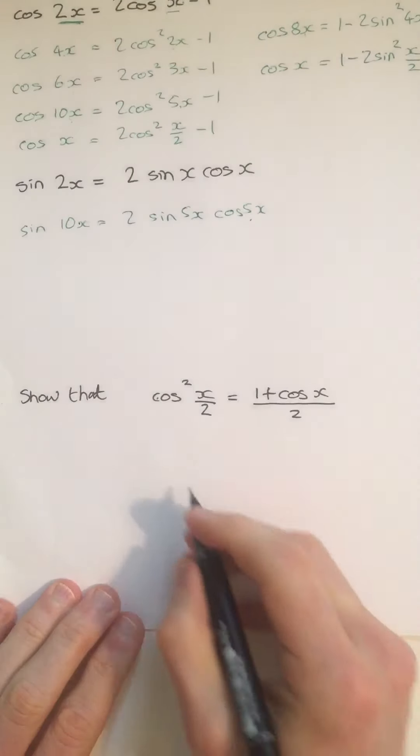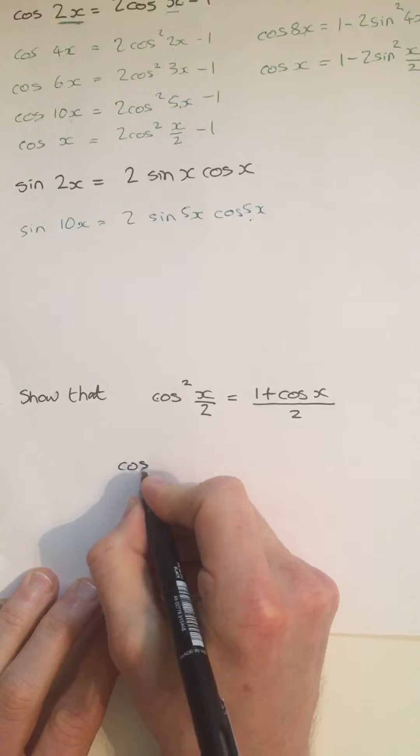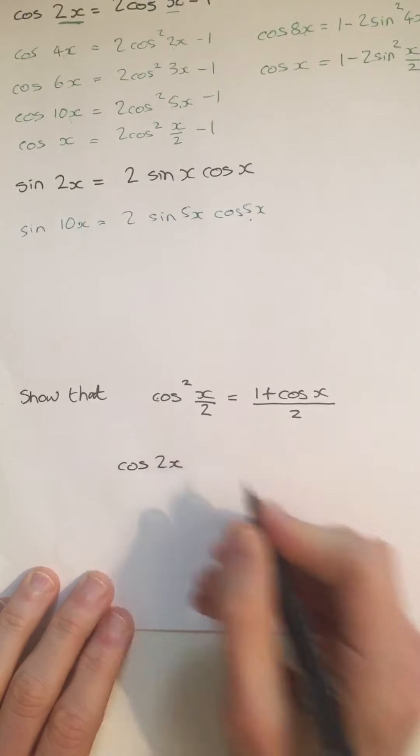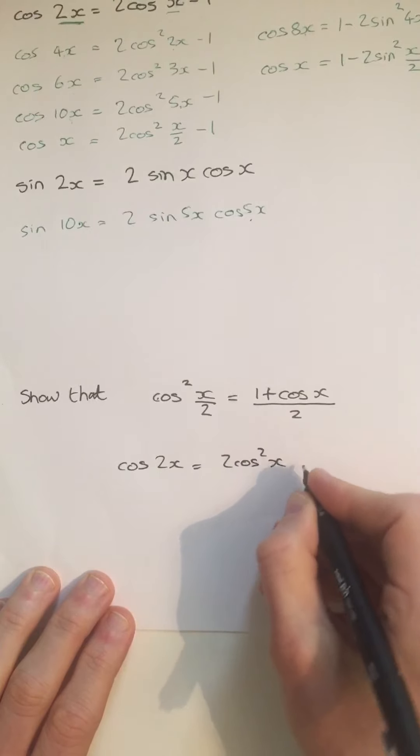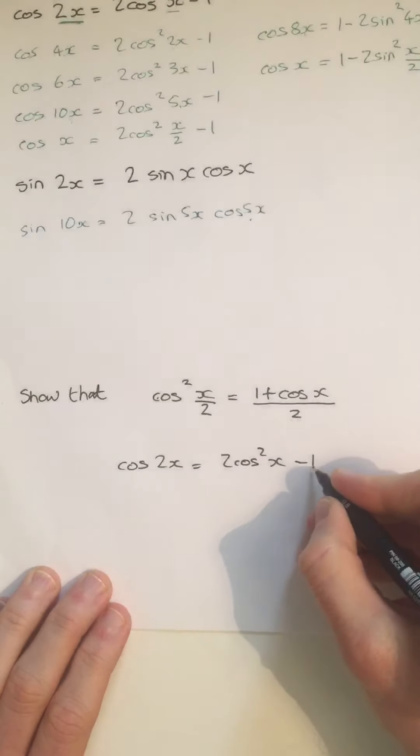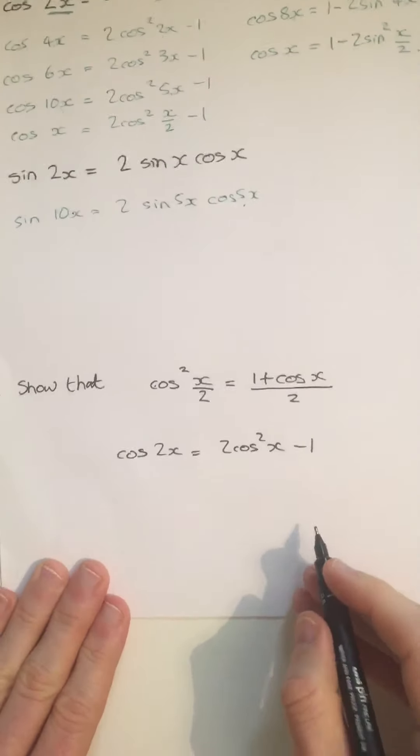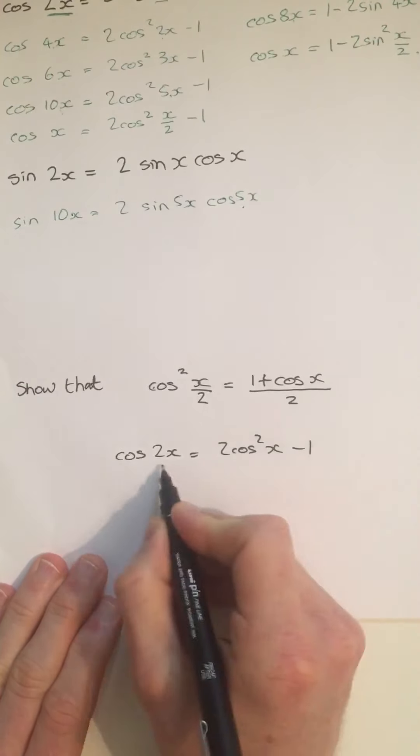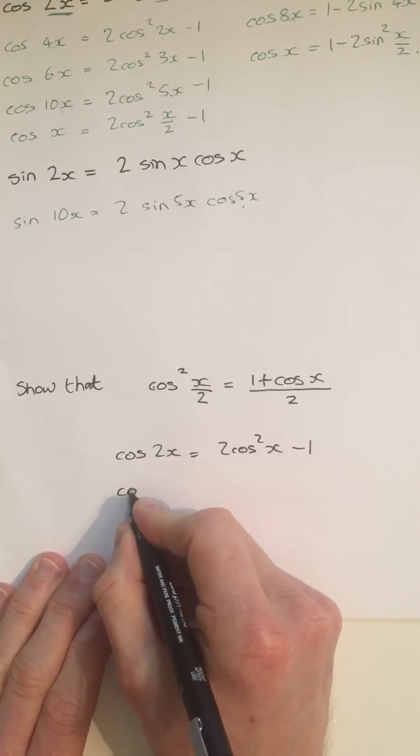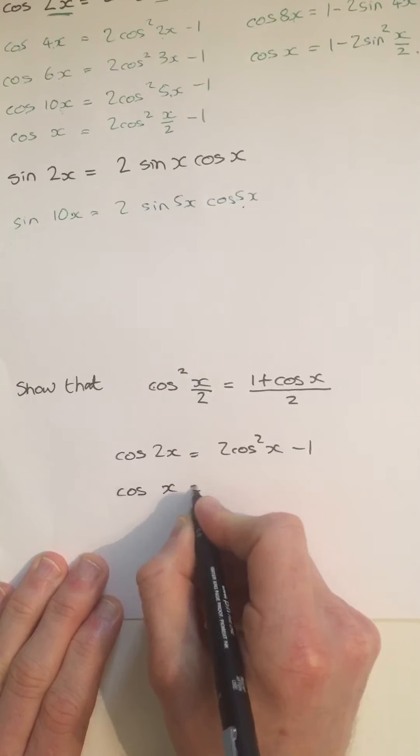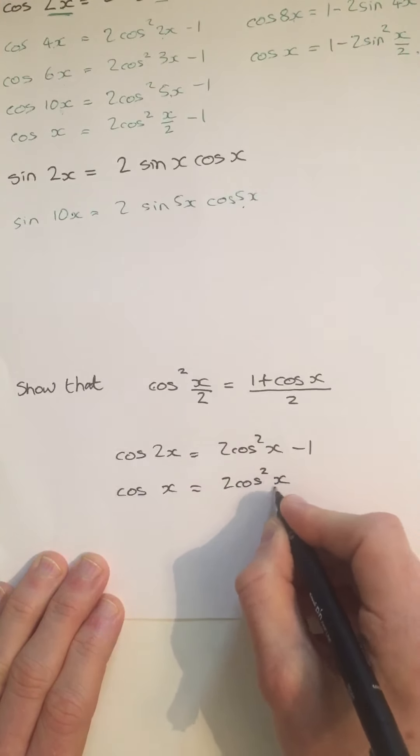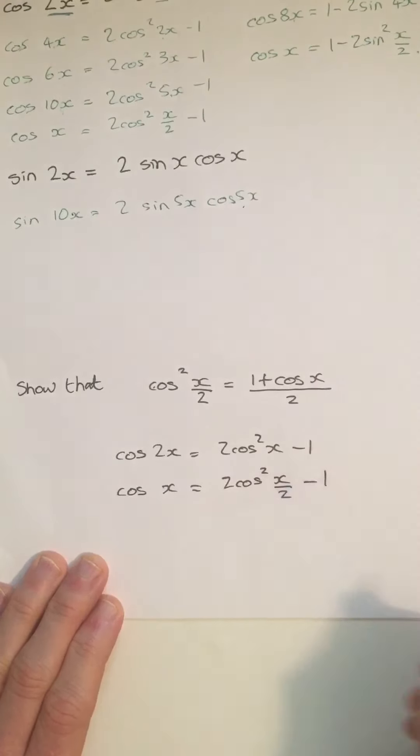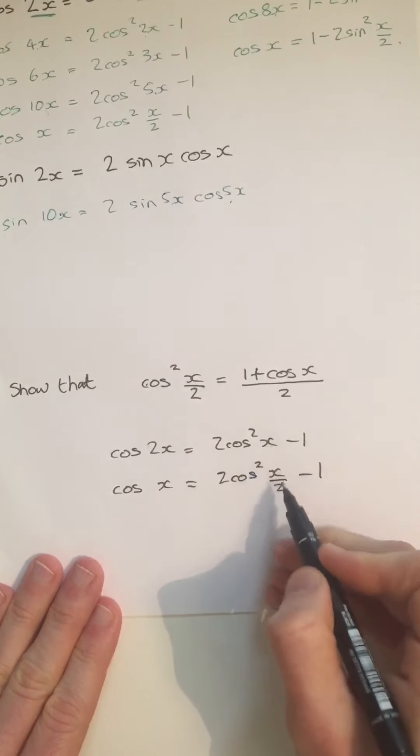So if we start with the cos double angle formula, cos 2x is equal to 2 cos squared x minus 1. And as long as we keep these in proportion, we can adjust this. So I'm going to rewrite this as cos x is equal to 2 cos squared x over 2 minus 1. Half this, half this.